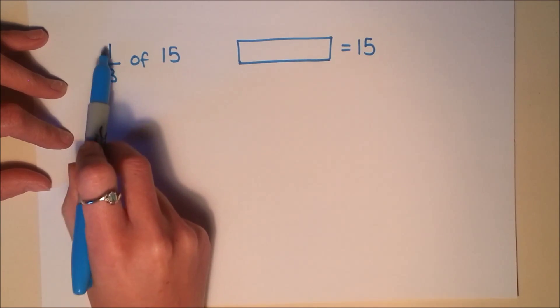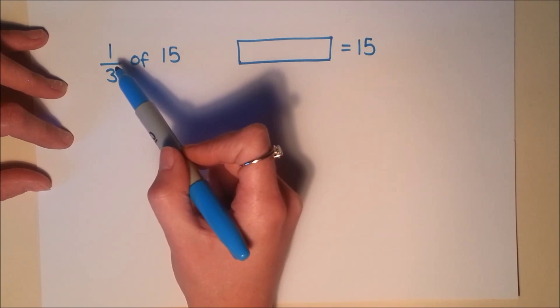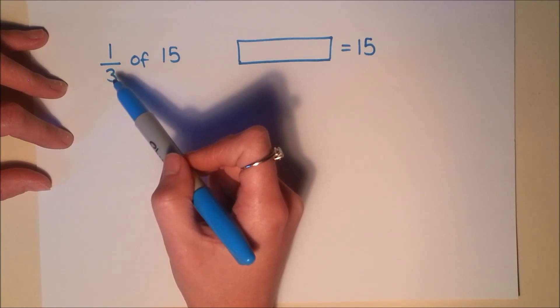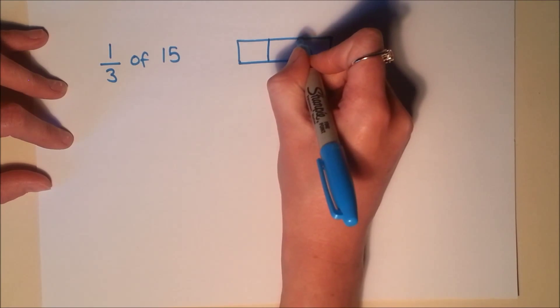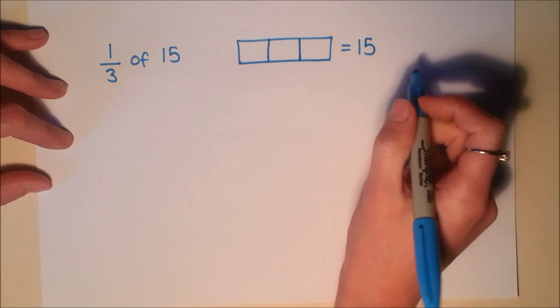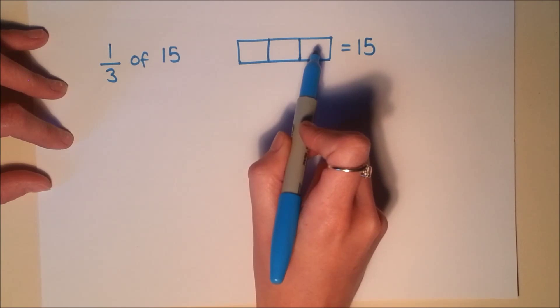We need to think about what this fraction means here. 1 third means 1 piece out of 3. So the denominator is telling me that I need to split my whole amount into 3 equal pieces. Try and get it as accurate as you can. So because I've got a denominator of 3, I've split this into 3 equal pieces.